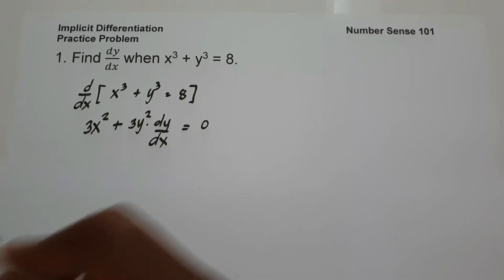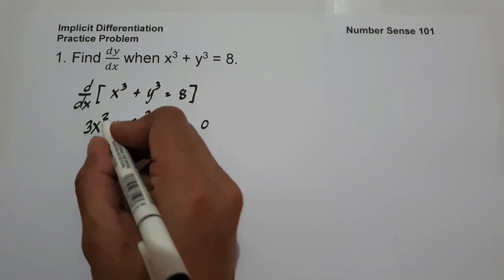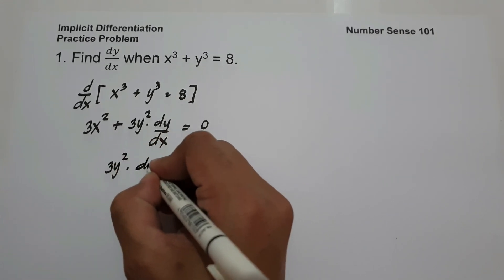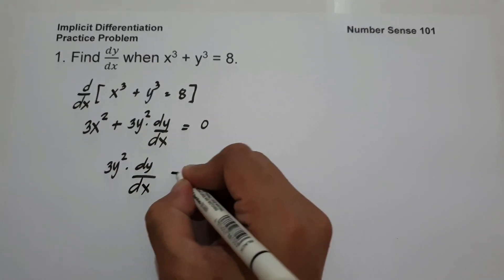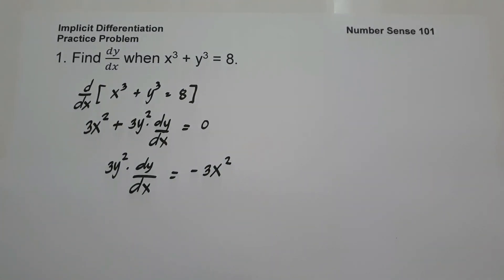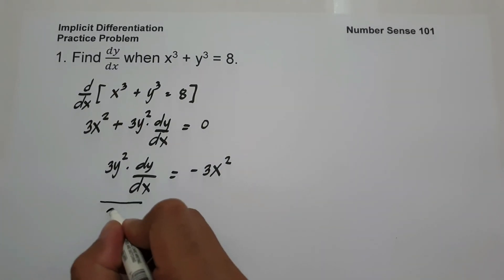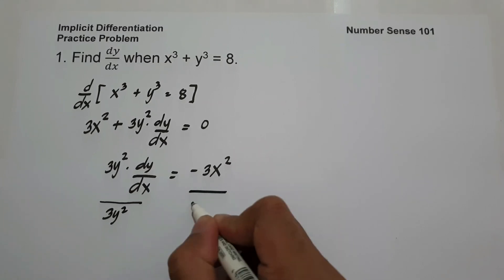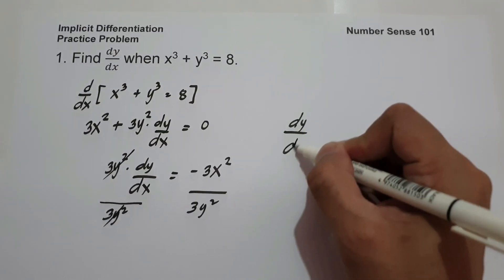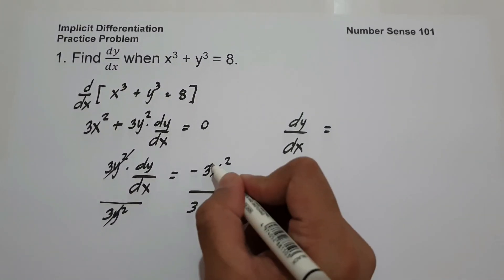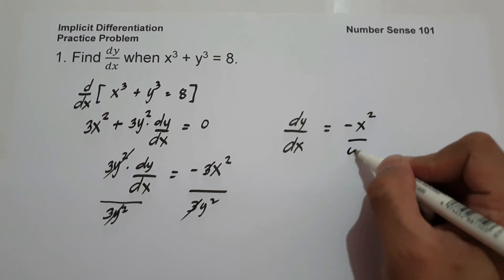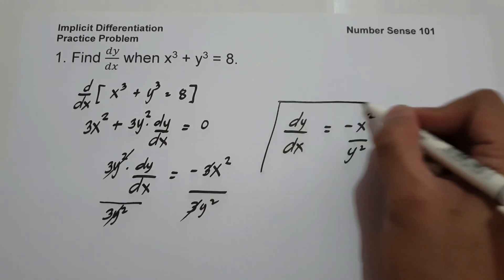To simplify our answer, let us move 3x squared to the other side. It will give us 3y squared dy over dx equals negative 3x squared. Then, let us divide both sides by 3y squared. The 3s cancel, so the value of dy over dx is negative x squared over y squared. And this will be our answer.